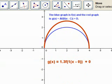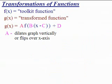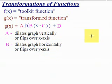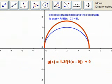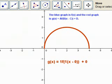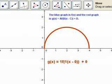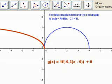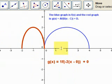The B value is also a multiplier, but it's inside the function whereas A is outside. B does the same kind of thing as A but in a horizontal direction, and it can also flip. B does the opposite of what you think: when B is 2, it shrinks the graph horizontally; when B is between 0 and 1, it stretches. When B is negative, it flips the graph over the y-axis.